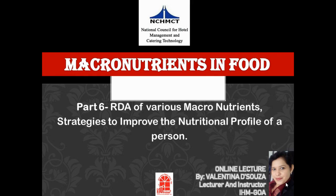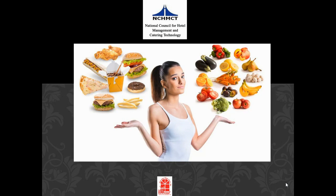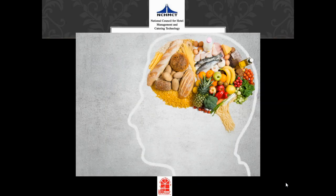Today I will be talking about the significance of the RDA of various macronutrients and the strategies to improve the nutritional profile of a person. Whenever we cook, we always try to follow a recipe in order to get a perfect blend of all the ingredients — to make sure it tastes perfect and ensure that no ingredient overpowers the other. At the end, if we follow the recipe well, we get a well-balanced dish with impeccable appearance, texture, and flavor. Hence, the recipe acts as a guide. Along those same lines in nutrition, we need to rely on a set of figures and proportions of nutrients that are needed by our body every day. This is called the Recommended Dietary Allowances, abbreviated as RDA.